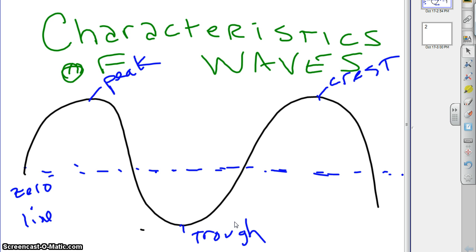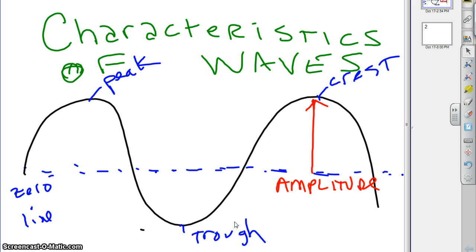The height of the wave is the distance from the zero line to a peak, and that has a special name — it's called the amplitude. There is also a certain distance you can measure from the peak of one wave to the peak of another, and that is called the wavelength.